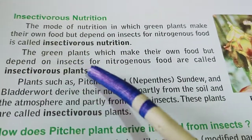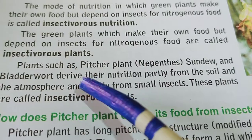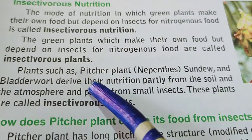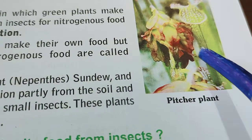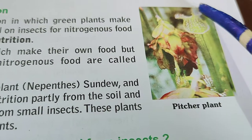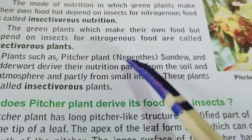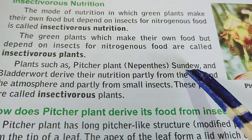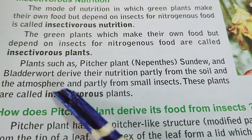The green plants which make their own food but depend on insects for nitrogenous food are called insectivorous plants. Examples include Nepenthes, commonly called the pitcher plant — the leaves of the plant look like a pitcher, long and narrow, forming a pitcher-like structure with an open end and a lid. Sundew and bladder wort are also common insectivorous plants. These plants derive their nutrition partly from the soil and atmosphere and partly from the bodies of insects.